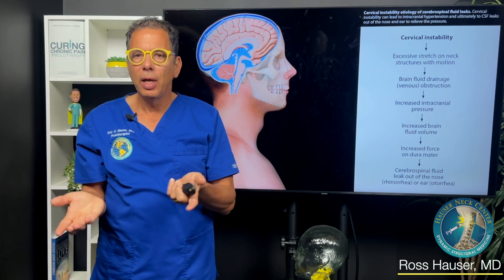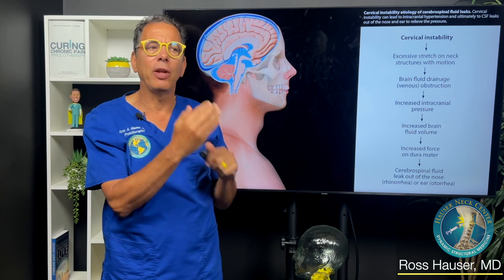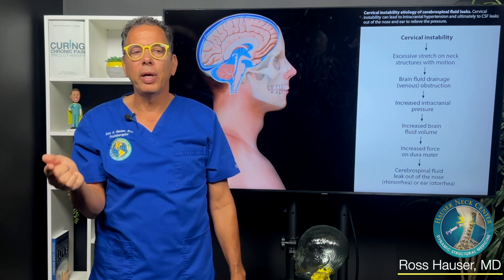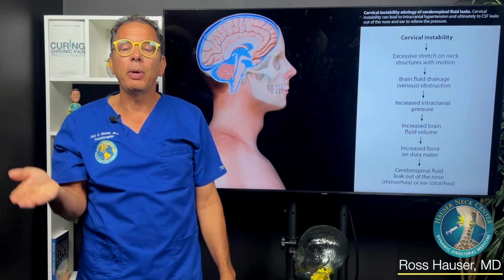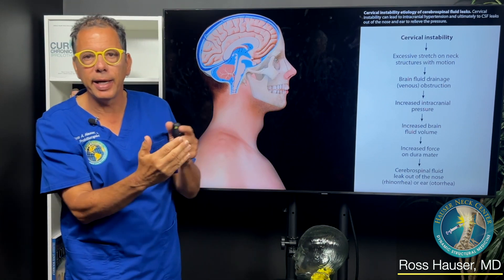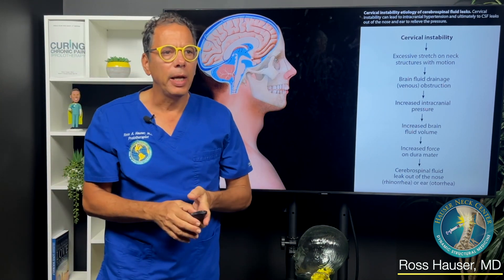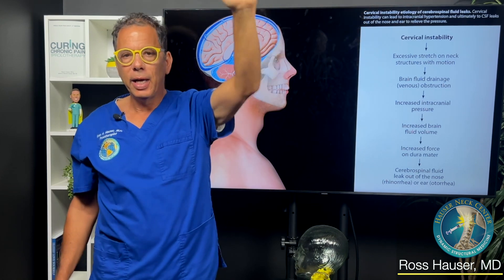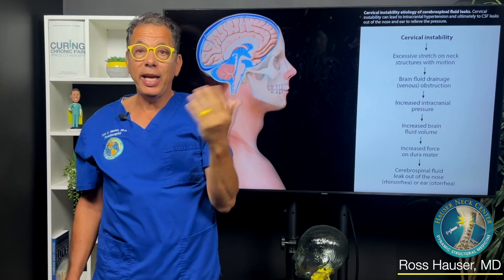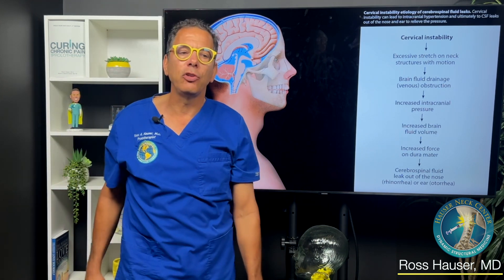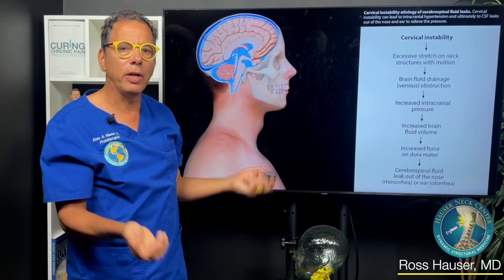Usually by the time people come to the Hauser Neck Center, they've already had multiple blood patches which haven't resolved it. If I feel somebody has a cerebral spinal fluid leak, I'll do prolotherapy for the ligamentous cervical instability but use a lot of blood — it's like putting blood on the outside where a blood patch puts it on the inside — and we've had good results. I had a patient who got into a really bad car accident; she had cerebral spinal fluid leaking out of her nose, and after two prolotherapy treatments with blood, it was resolved and has been resolved for a long time.